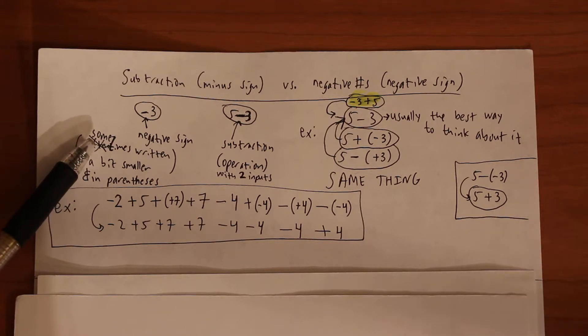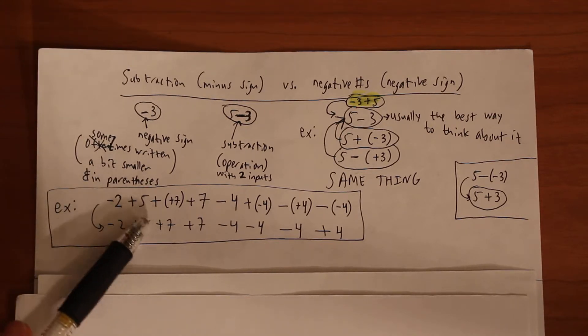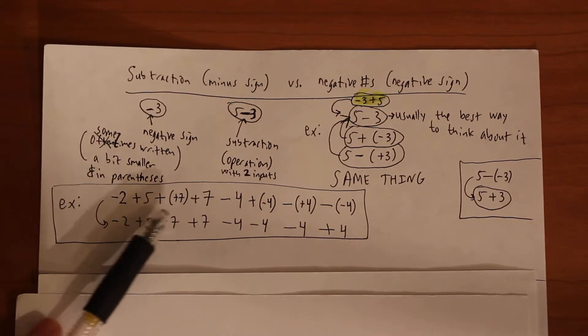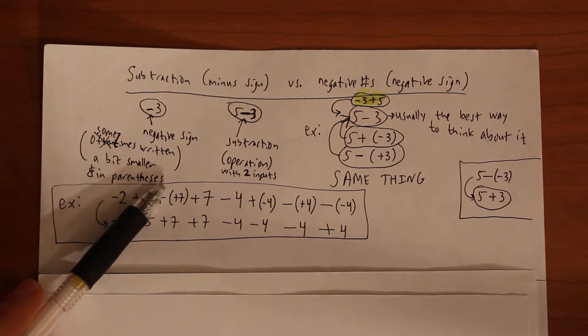Also, you may want to put things in parentheses. So for example, if I just had the plus plus without the parentheses it might look really confusing. So by putting the parentheses I'm emphasizing that that's a positive 7.